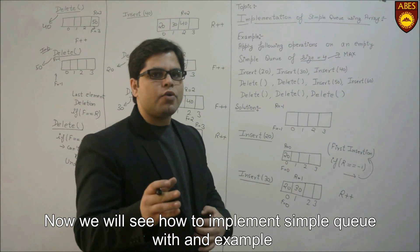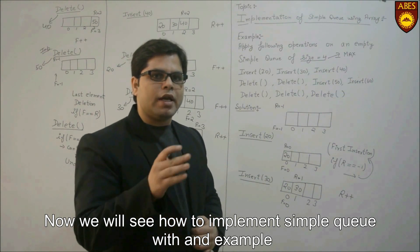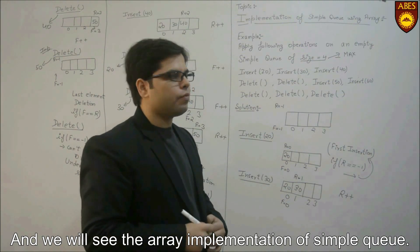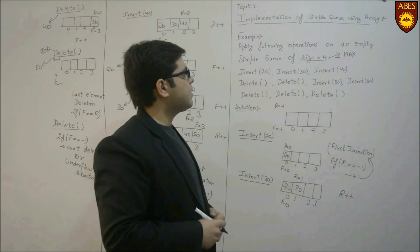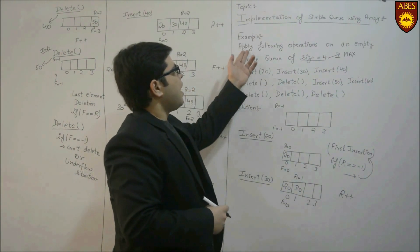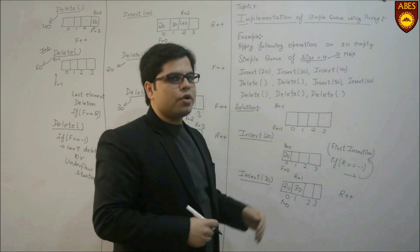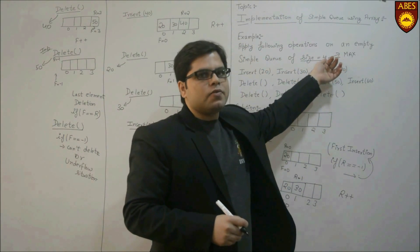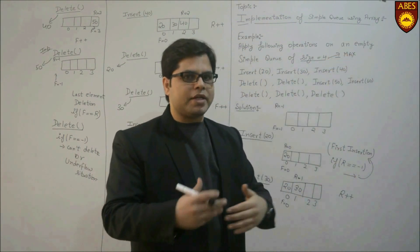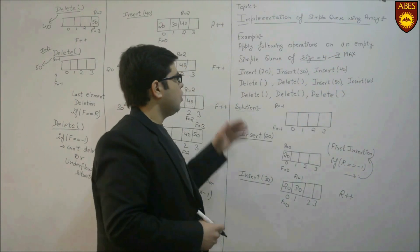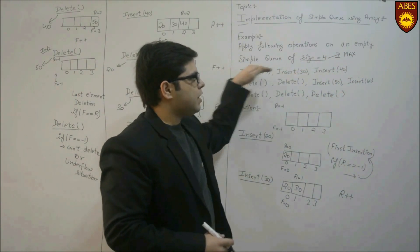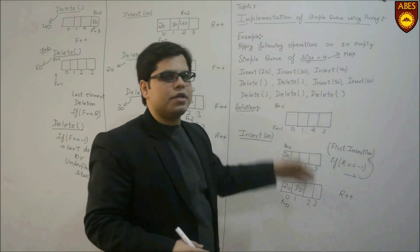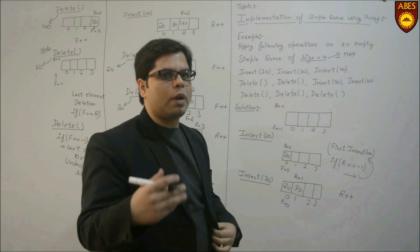Now we will see how to implement a simple queue with an example — the array implementation of simple queue. We have to apply the following operations on an empty simple queue of size 4, where 4 is named as max, the maximum size of the queue. We have to insert some elements, delete some elements, then again insertion and deletion. We will see this one by one.